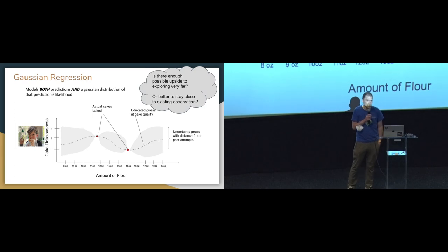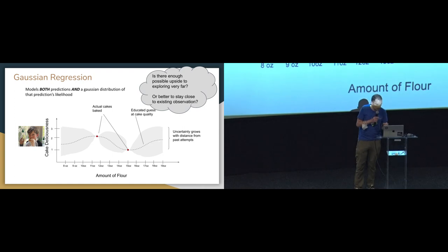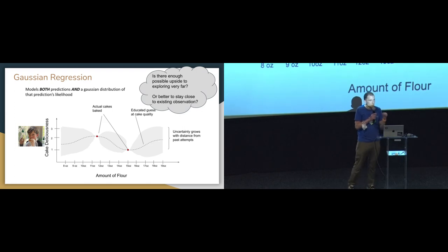This is how Gaussian regression works. Gaussian regression is the model at the core of Bayesian optimization — it connects the dots between observations already made. Here we have baked cakes rated on a one-to-three scale, with amount of flour in ounces on the x-axis. As we move away from existing observations, the gray uncertainty region widens. As we get closer to observations, it gets smaller. We can use this to balance our desire to exploit existing knowledge versus exploring further out.